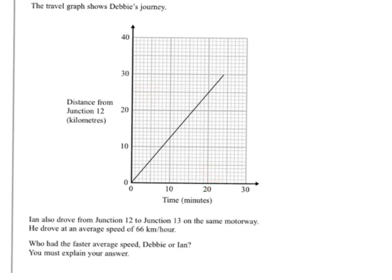Now 20 minutes, well 20 goes into an hour three times. So we can find out her speed per hour by doing three times the distance she travelled in 20 minutes, which is three times 25. So three times 25 gives us 75 kilometres per hour.